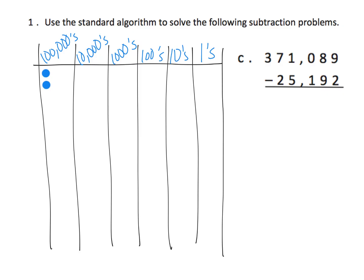We have 300,000, and then we have seven 10,000s. Notice I'm doing it in the 10-frame style, creating columns of five. We have one in the thousands. We have nothing in the hundreds place. We have eight in the tens — one, two, three, four, five, six, seven, eight. And we have nine in the ones.